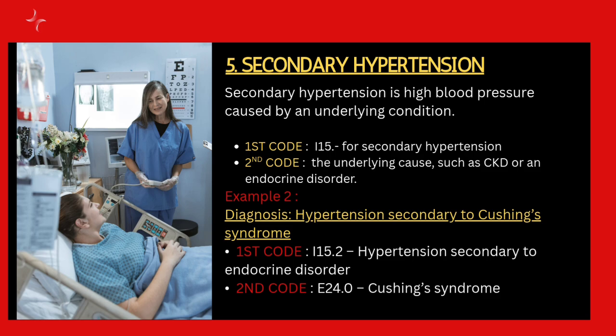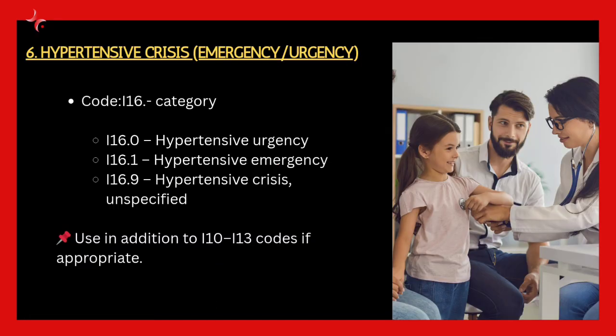Next we'll see secondary hypertension. Secondary hypertension means high blood pressure caused by an underlying disease condition. For coding secondary hypertension, the first code will be the secondary hypertension code from the I15 series, and the second code should be for the underlying disease condition such as CKD or endocrine disorder.